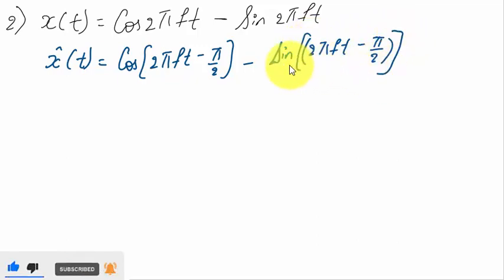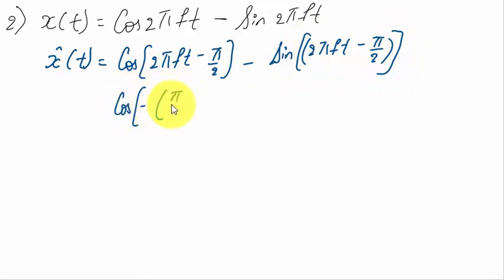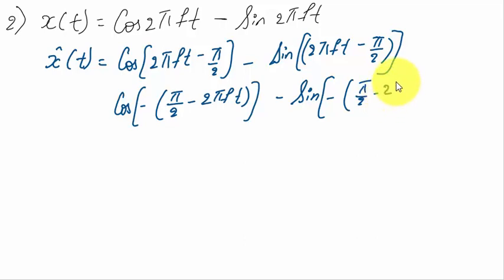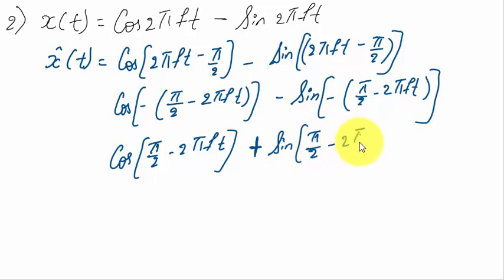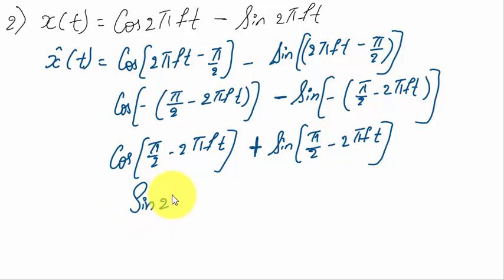Simplifying: cos(−θ) = cos(θ), so cos(π/2 − 2πft) remains. For the sine term: sin(−θ) = −sin(θ), and since there is already a minus sign, it becomes +sin(π/2 − 2πft). Now cos(π/2 − θ) = sin(θ), giving sin(2πft). And sin(π/2 − θ) = cos(θ), giving +cos(2πft). Therefore x̂(t) = sin(2πft) + cos(2πft).